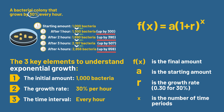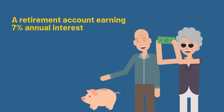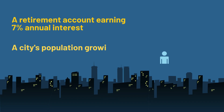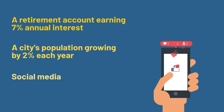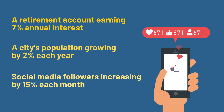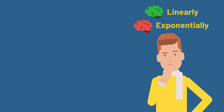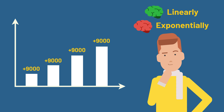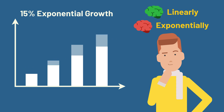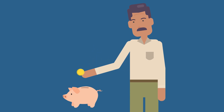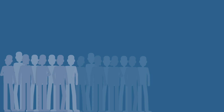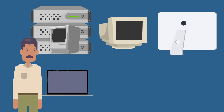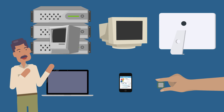We see similar patterns in many places: a retirement account earning 7% annual interest, a city's population growing by 2% each year, or social media followers increasing by 15% each month. But here's where people often get tripped up — we're naturally wired to think linearly, not exponentially. If your city grows by 9,000 people this year, you might expect 9,000 next year, but with 15% exponential growth, each year brings significantly more residents than the last.